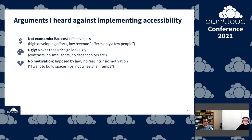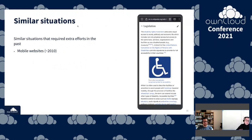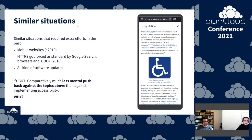I thought of similar situations that required extra efforts in the past. Around 2010 there was the rise of mobile websites — you suddenly had to implement a second kind of front end. Another example is HTTPS becoming a forced standard via GDPR, Google search, and browsers around 2018. And of course all kinds of software updates mean extra effort. But I encounter much less mental pushback against those topics than against implementing accessibility — so why is that?